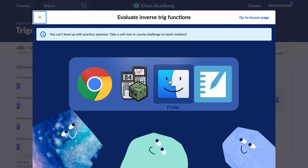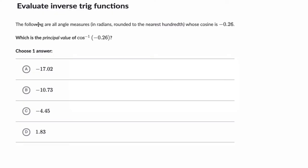And we'll do a little bit of background as well. So for example, it says the following are all angle measures whose cosine is negative 0.26, which is the principal value of the arc cosine or inverse cosine of negative 0.26. So first of all, let me show you how to solve this.